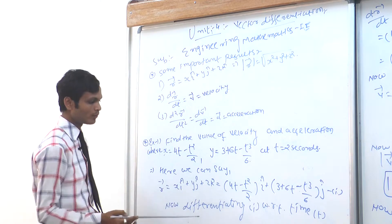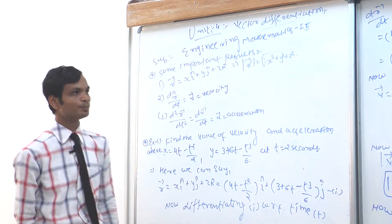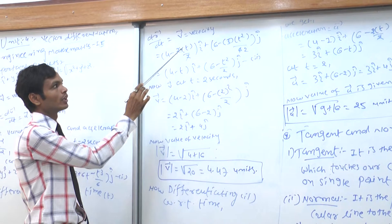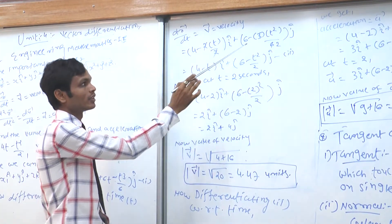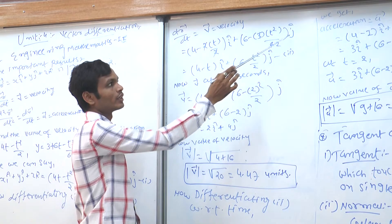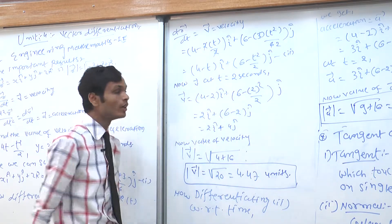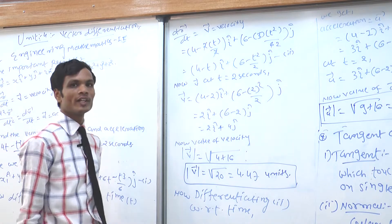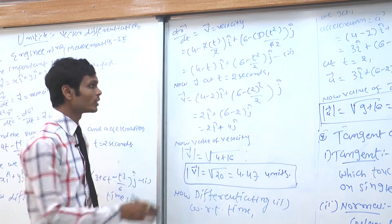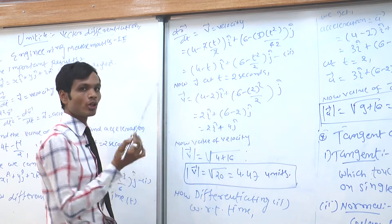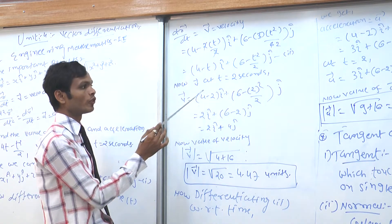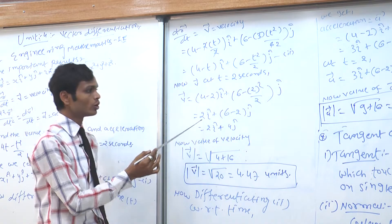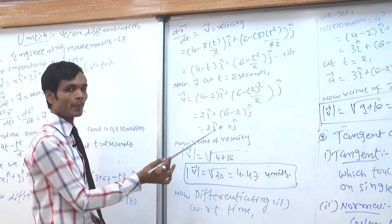Differentiating equation 1 with respect to time t, we get dr/dt, which is velocity. So velocity v = (4 − t)i + (6 − t²/2)j. Now putting t = 2: v = (4 − 2)i + (6 − 4/2)j = 2i + (6 − 2)j = 2i + 4j.